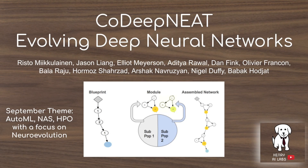Thanks for watching Henry AI Labs. This video is on CoDeepNEAT, a technique for evolving deep neural networks, scaling up the NEAT algorithm to evolve large convolutional and recurrent neural networks. This is part of the September theme on Henry AI Labs of AutoML, neural architecture search, and hyperparameter optimization, with a focus on neural evolution techniques using evolutionary algorithms to optimize either the weights of neural networks through an optimization technique that doesn't rely on backpropagation, or using evolution to design neural network architectures and optimize hyperparameters.